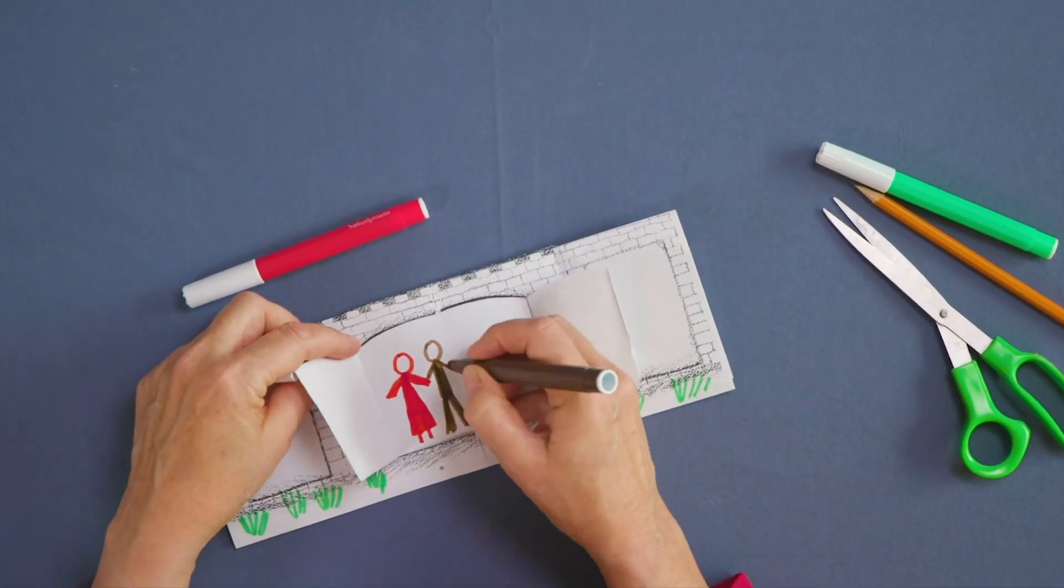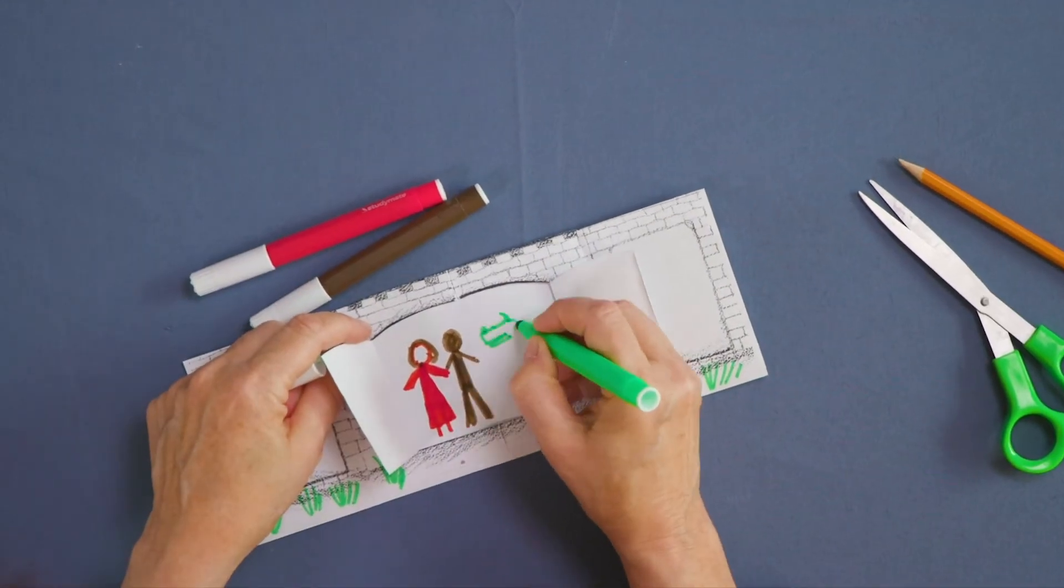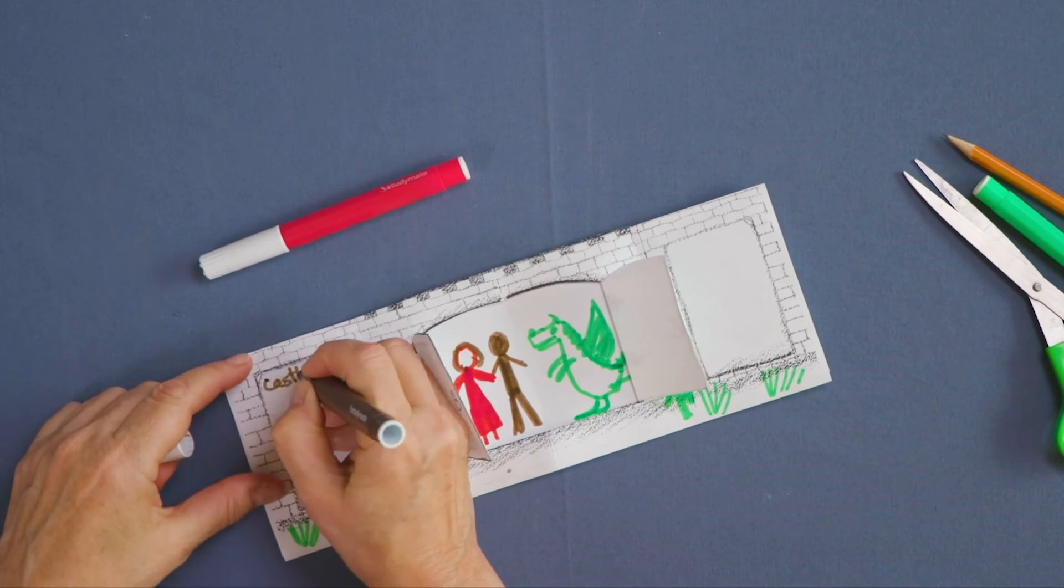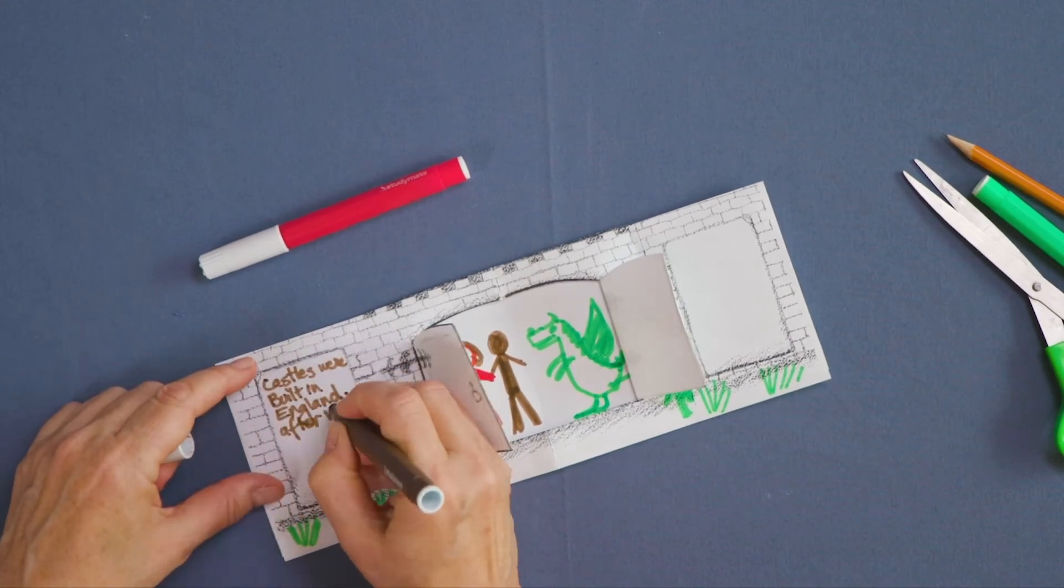Draw on the castle, adding people or dragons feasting inside. Write a story about your castle using some of the facts on the blank panels.